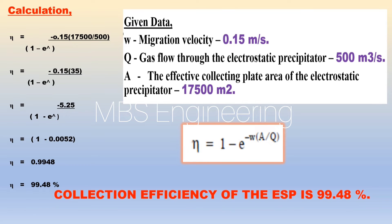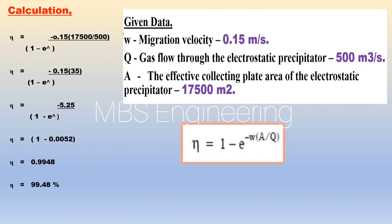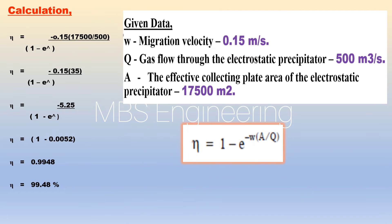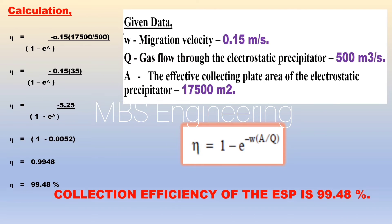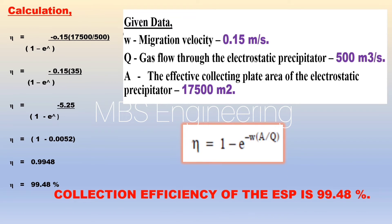As per the Deutsch-Anderson equation, the collection efficiency of the electrostatic precipitator ATH equals 1 minus e to the power of migration velocity multiplied by effective collecting plate area divided by gas flow through the electrostatic precipitator. Please refer to the step-by-step detailed calculation for a better understanding. Based on the given data, the collection efficiency of the electrostatic precipitator is 99.48%.